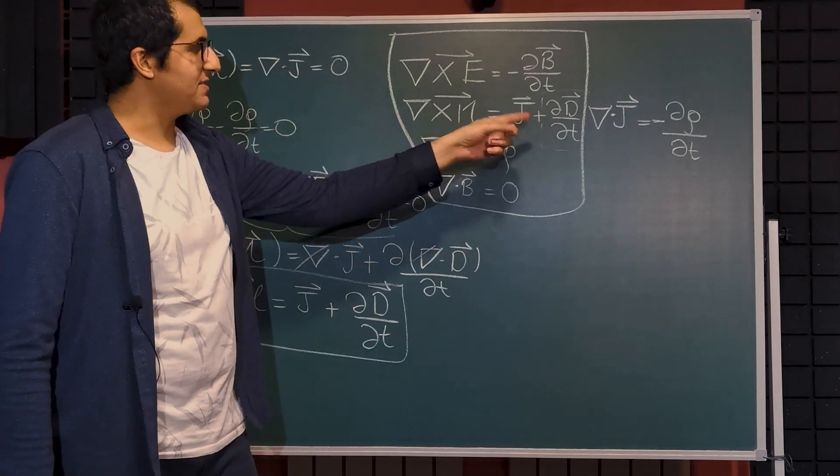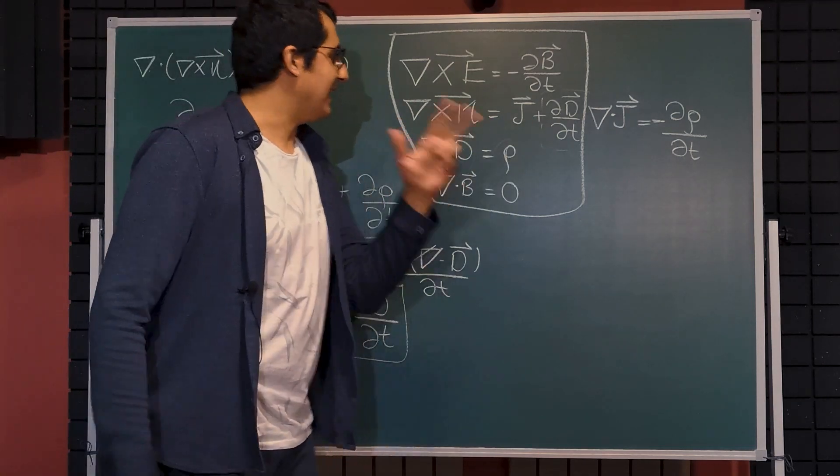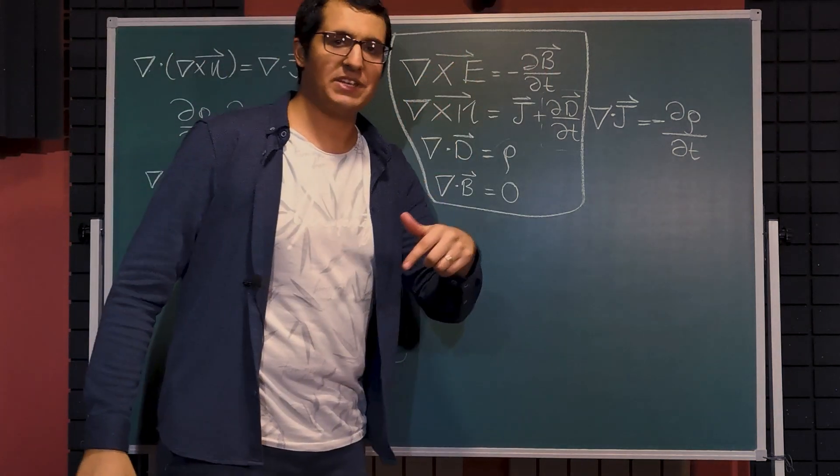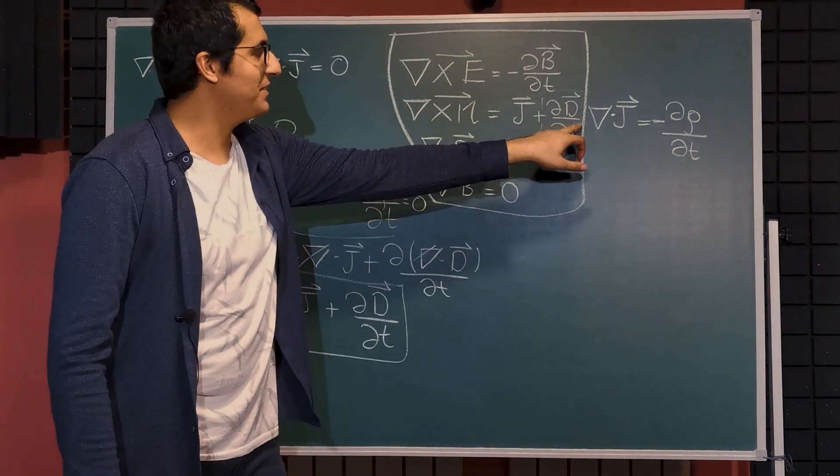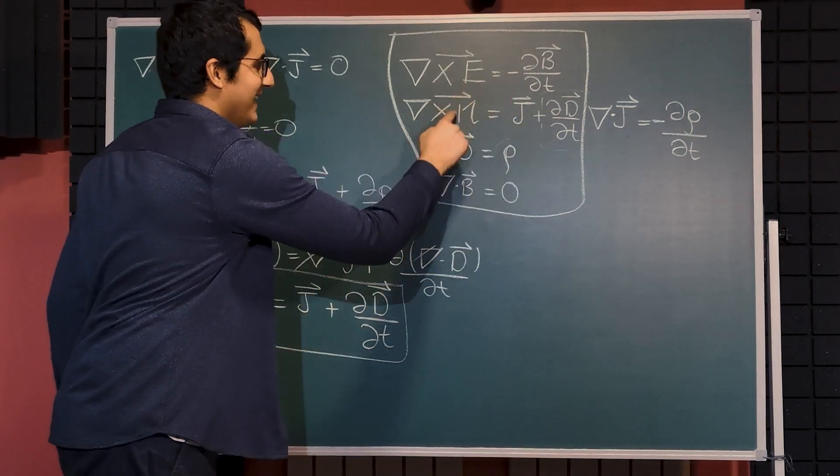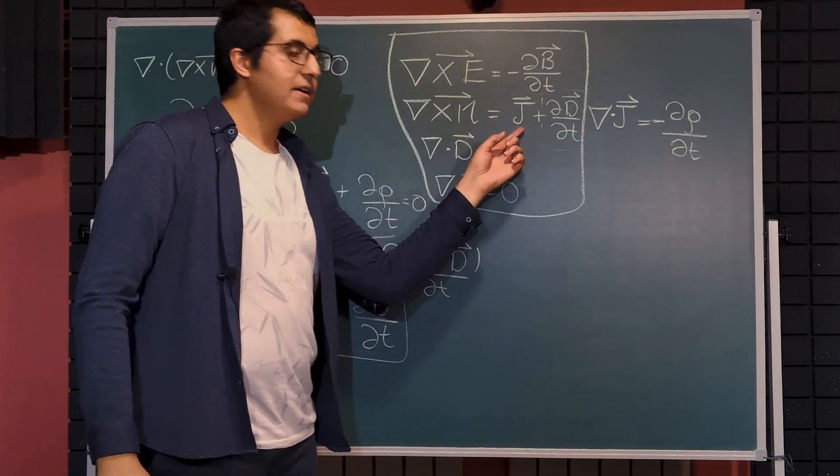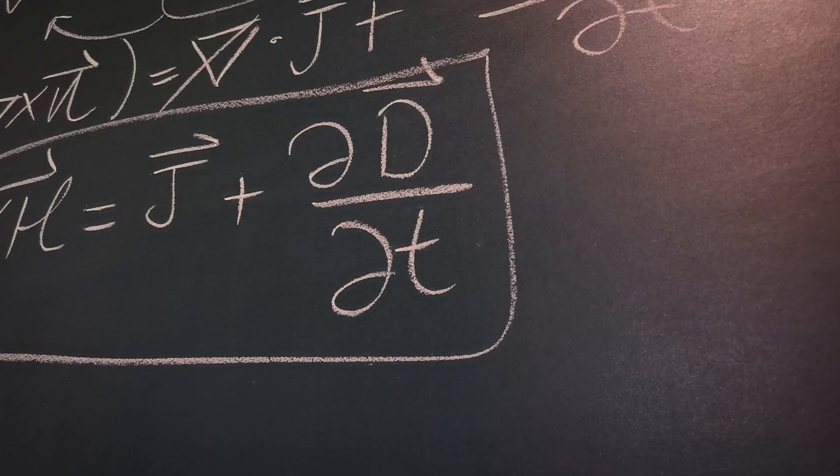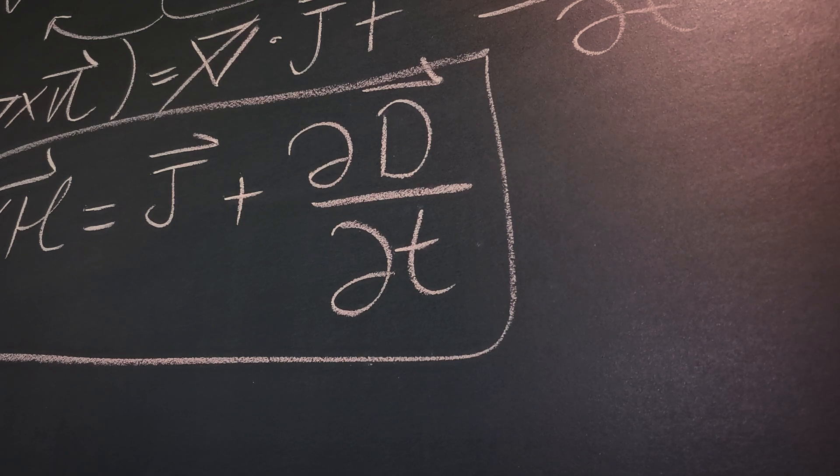But the second equation tells us something weird. That if you have a changing magnetic field, that will create an electric field which is also changing. And if you have a changing electric field, that will also create a changing magnetic field, even if there is no current flow. If J is zero, this equation is valid. If J is zero, there will still be a magnetic field created by an electric field.